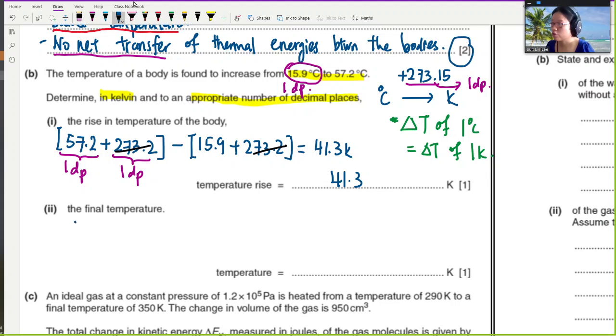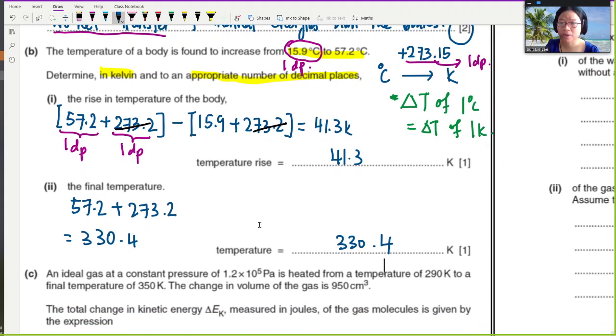But here, if you want the final temperature, which is 57.2 degrees Celsius, we will add 273.2, and this will give us 330.4 Kelvin. Okay, so that's part B about temperature scales. We're going to move on to part C now.